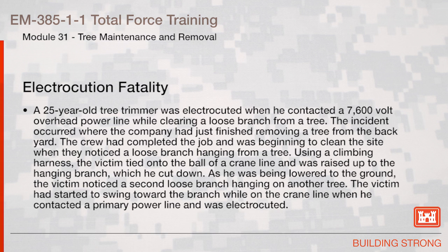Electrocution Fatality: A 25-year-old tree trimmer was electrocuted when he contacted a 7,600-volt overhead power line while clearing a loose branch from a tree. The incident occurred where the company had just finished removing a tree from the backyard. The crew had completed the job and was beginning to clean the site when they noticed a loose branch hanging from a tree. Using a climbing harness, the victim tied onto the ball of a crane line and was raised up to the hanging branch, which he cut down. As he was being lowered to the ground, the victim noticed a second loose branch hanging on another tree. The victim had started to swing towards the branch while on the crane line when he contacted a primary power line and was electrocuted.